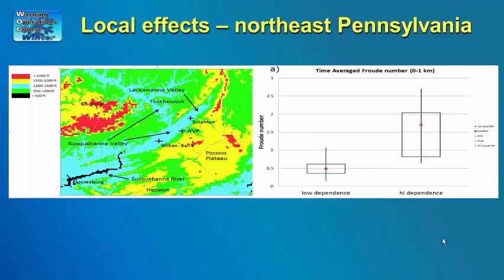The utility of considering blocked flow via the Froude number for anticipating snowfall patterns in terrain was also demonstrated in a study for northeast Pennsylvania. The terrain around Wilkes-Barre and Scranton is characterized by a broad southwest-to-northeast oriented valley surrounded by higher terrain. Low dependence cases — when the valley gets similar snowfall as nearby higher terrain — were associated with low Froude numbers, implying high stability and light winds, while high dependence cases — when higher terrain gets substantially more snowfall than the valley — were associated with higher Froude numbers, lower stability, and/or stronger winds.